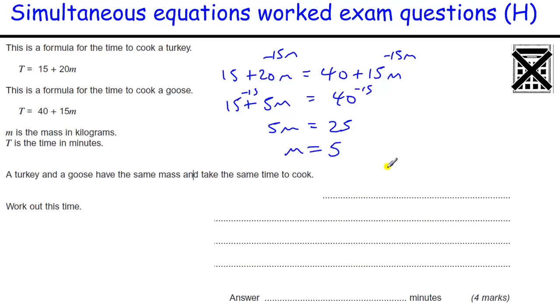What I've done there is I've taken the 15m from both sides to get 5m equals 25, so m equals 5 kilograms. So if it's 5 kilograms, if we put into either of those two formulas the time is going to be 15 plus 20 times 5. That's 115. Just check it works in the other one. 15 times 5 is 75, 40 plus 75 is also 115, so that's fine. So the time is going to be 115 minutes.